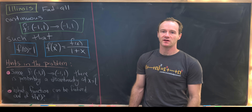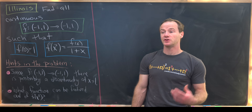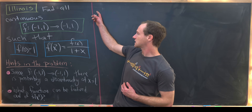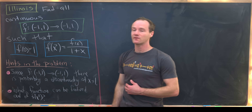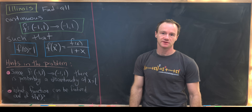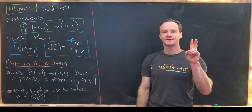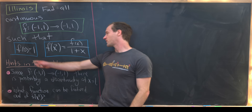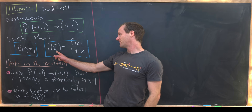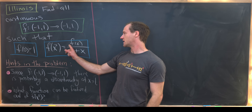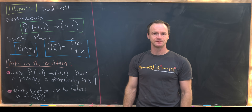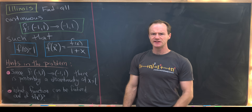Here I've got a problem from an undergraduate math contest from the University of Illinois. Our goal is to find all continuous functions from (-1, 1) to (-1, 1), where those are both open intervals, satisfying two conditions. First, f(0) = 1. And second, f(x²) = f(x) / (1 + x).